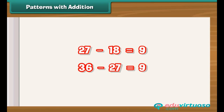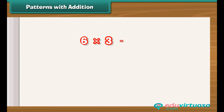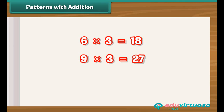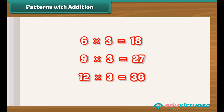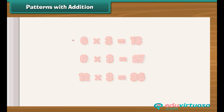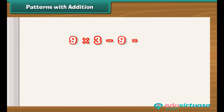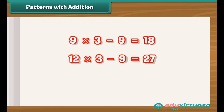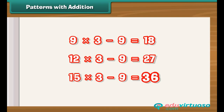There is another interesting fact: each sum is thrice the middle term. 6 times 3 equals 18; 9 times 3 equals 27; 12 times 3 equals 36. There is one more interesting fact: each sum is 9 less than thrice the last term. 9 times 3 minus 9 is 18; 12 times 3 minus 9 is 27; 15 times 3 minus 9 is 36.